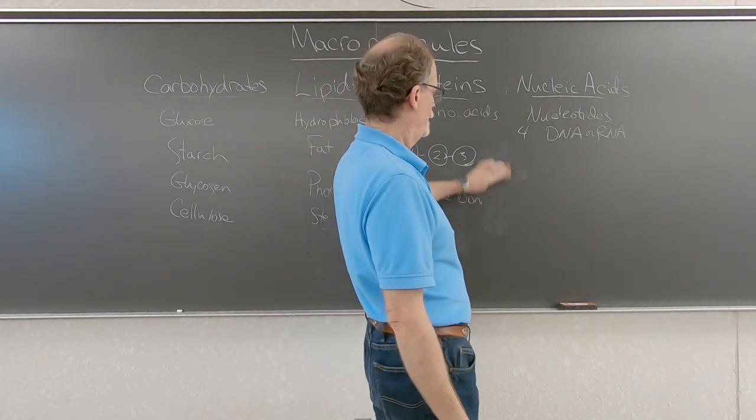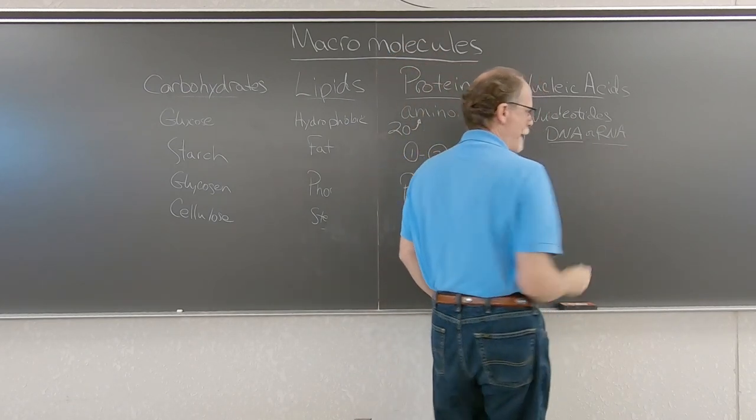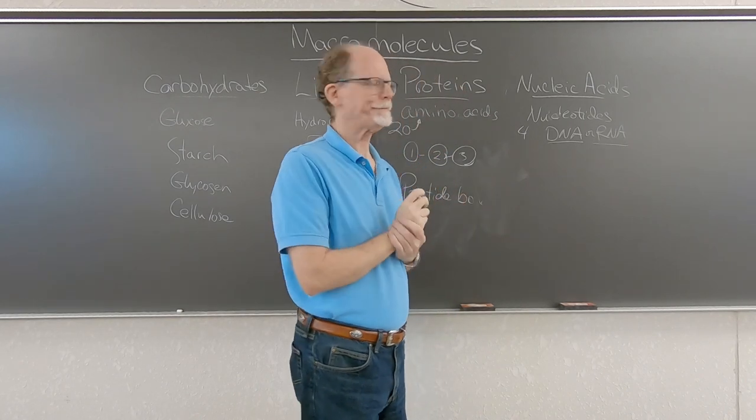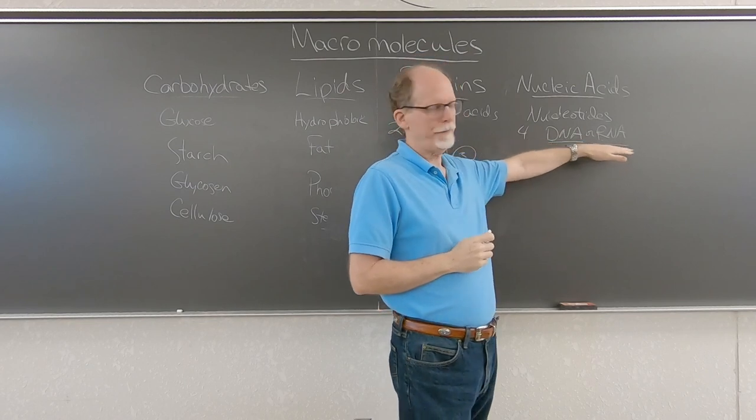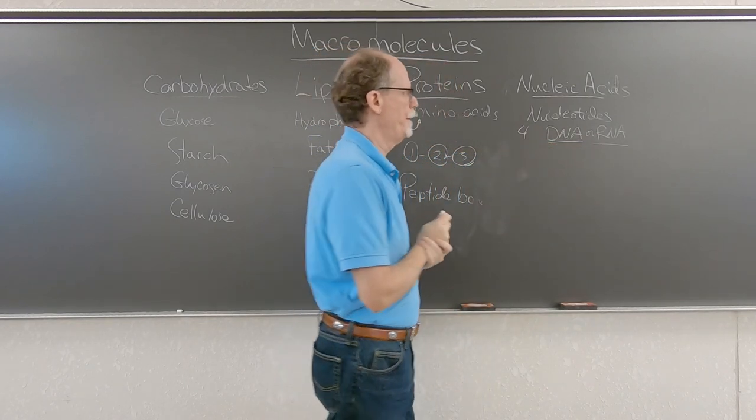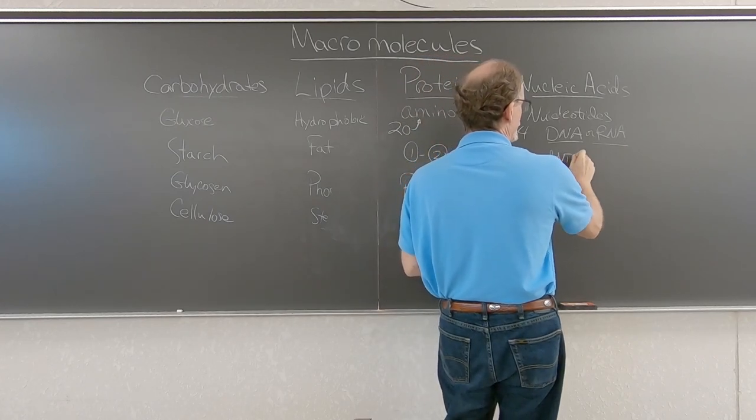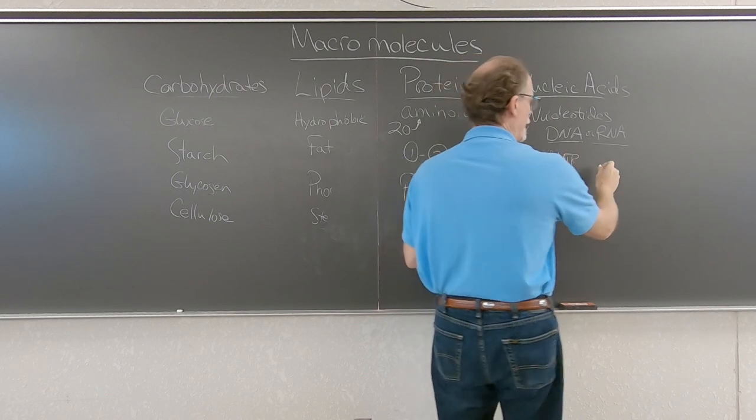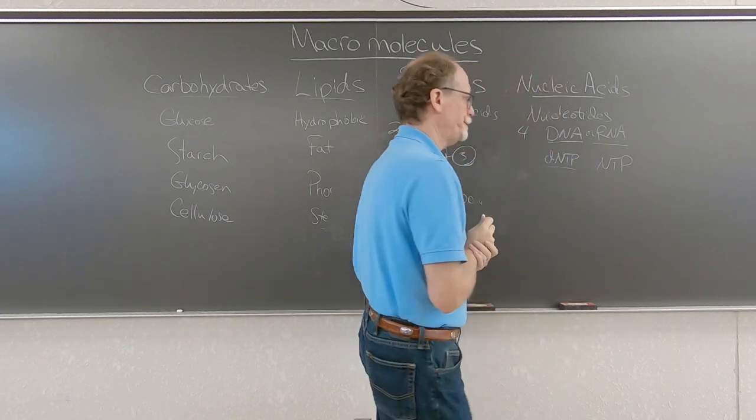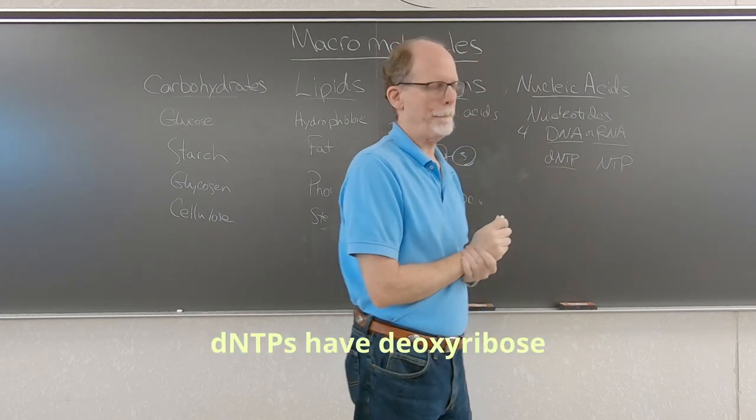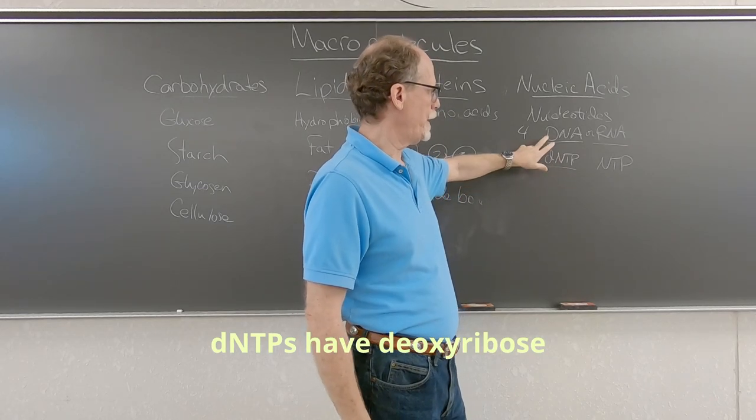Now, when you, nucleic acids are the macromolecule, and then two of the major examples of that is DNA and RNA. Now, you have DNA nucleotides, or let's say little dNTPs, there's four of them, and then there's nucleotide triphosphates. That's what NTP stands for. There's four of them that make up RNA. The ones that make up DNA have deoxyribose. That's what the D stands for.